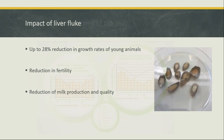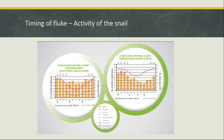Strategic treatment timing is about the activity of the snail more than production events like pre-lambing or weaning. The biggest factor affecting snail activity is mean temperature — they need a mean temperature above 10 degrees. When it gets too cold, the snails go down into the mud and hibernate, slowing the infection cycle. If snails are hibernating, they're not actively getting infected, which is why treatment timing needs to be aligned with snail activity.